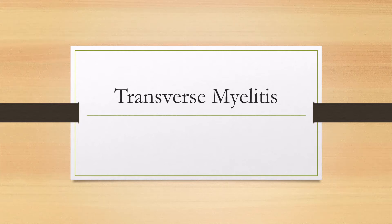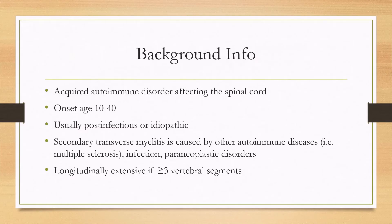Let's talk about transverse myelitis. This is an acquired autoimmune disorder affecting the spinal cord. The onset is usually between the age of 10 and 40. It's most commonly post-infectious or idiopathic; however, secondary causes need to be ruled out, and these can be caused by autoimmune diseases, infections, or paraneoplastic disorders.